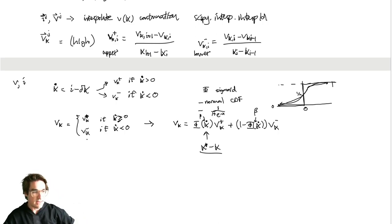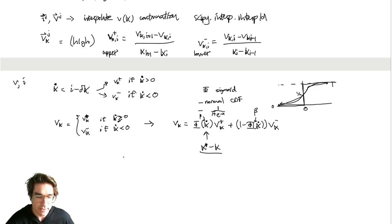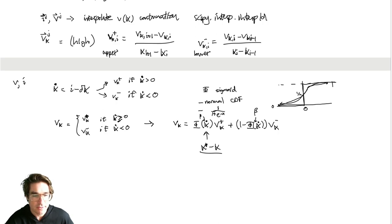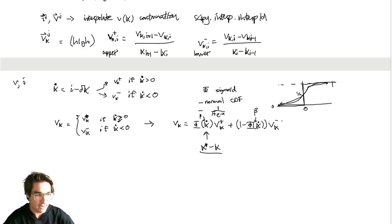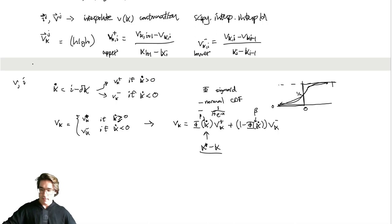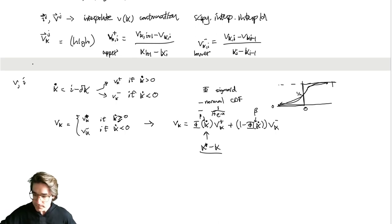Those are the two key computational ingredients: interpolation of the continuation value using interp1d, and the intelligent upwinding scheme for derivatives. The two main things to get right are those, and then you'll be all set. If you get the upwinding wrong things will blow up — it's not just stylistically better, it's numerically necessary.